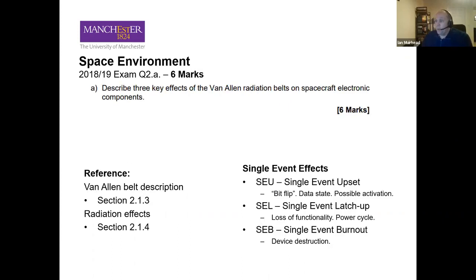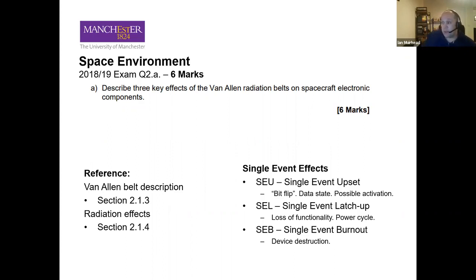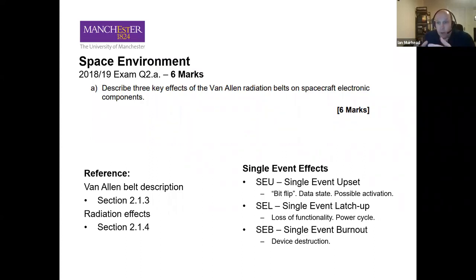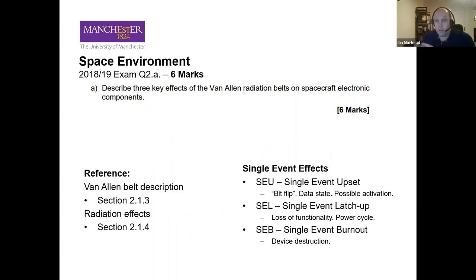The next question is from 2018-19, question 2a, worth six marks. The topic is the Van Allen radiation belts, referencing sections 2.1.3 and 2.1.4. The question asks: describe three key effects of the Van Allen radiation belts on spacecraft components. The first is a single event upset — effectively a bit flip. A photon hits a circuit board holding a charge representing a one or zero and flips it, causing data corruption, a blocked pixel, or potentially activating a thruster — it can be major or relatively minor.